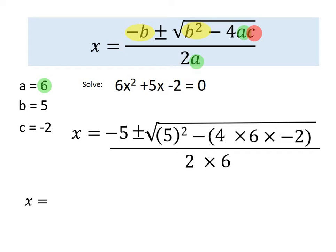Now, we can simplify that a little bit before we put it into the calculator. So x equals negative 5, plus or minus, and I'll come back to that in a bit. The square root of 5 squared, which is 25, minus 4 times 6 times negative 2. So that's 4 times 6 times negative 2 is negative 48. All over 2 times 6, which is 12.